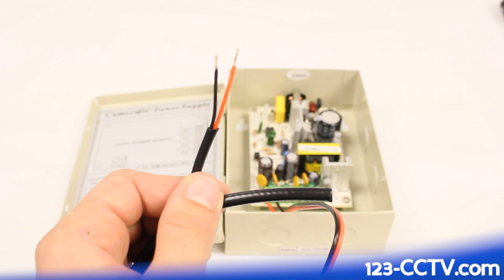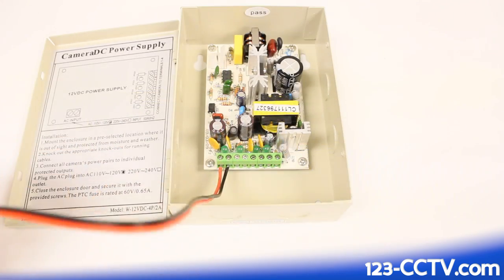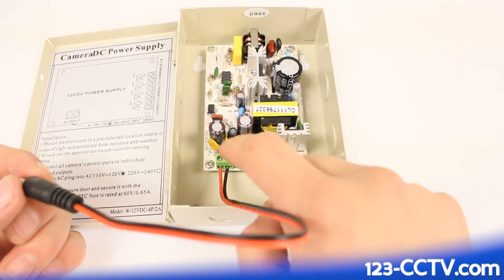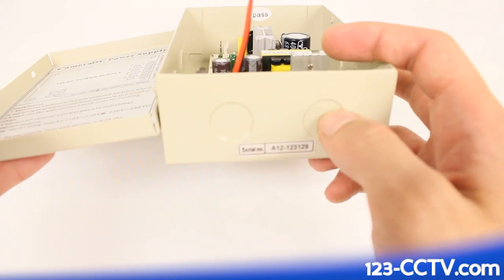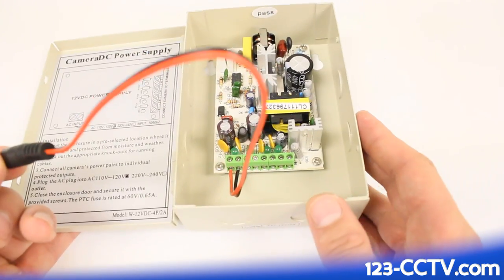I went ahead and stripped it, so let's go ahead and install this into the power box. For pigtails, you can install them first by securing them into the terminal block. Another way to put your cables in is to punch out one of the holes on the bottom of the box. This will make it a lot easier for the Siamese or bulk cabling.